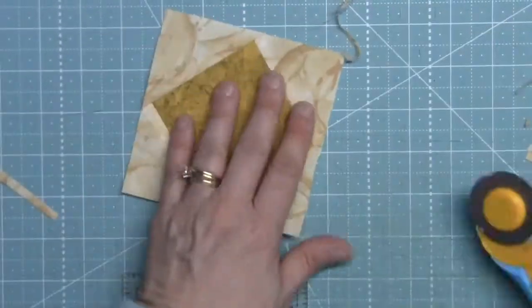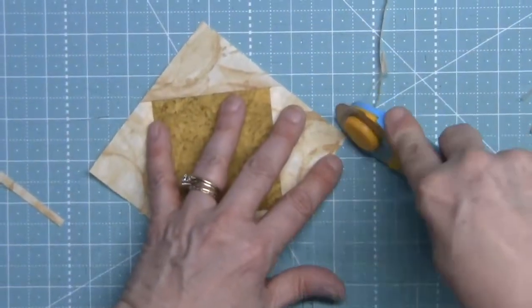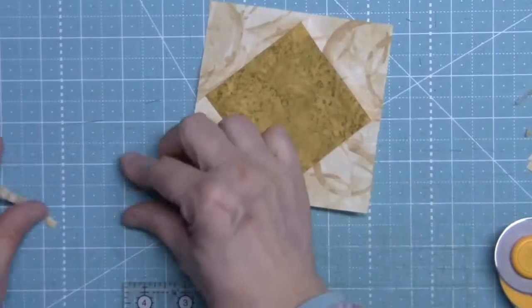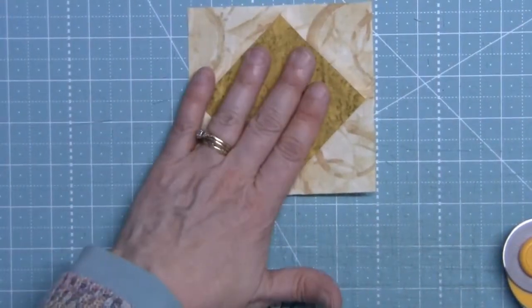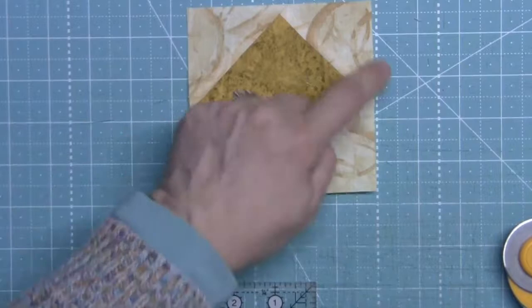So I'm going to do that for all five of the square in a square units made with the fabric E square and the fabric A triangles.